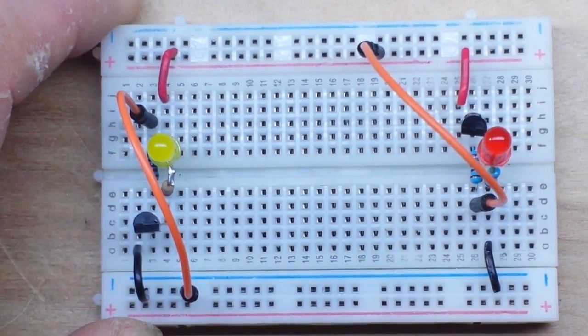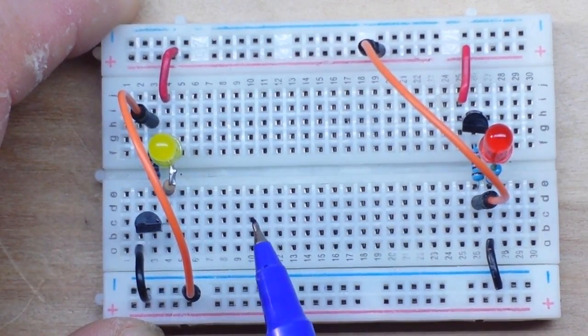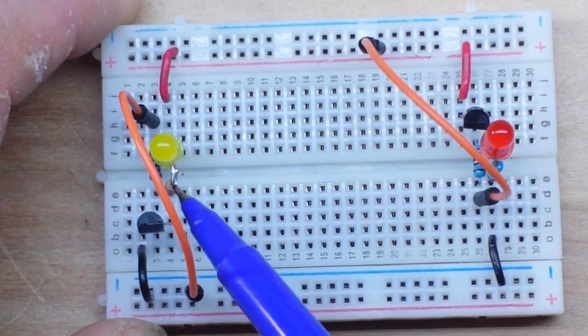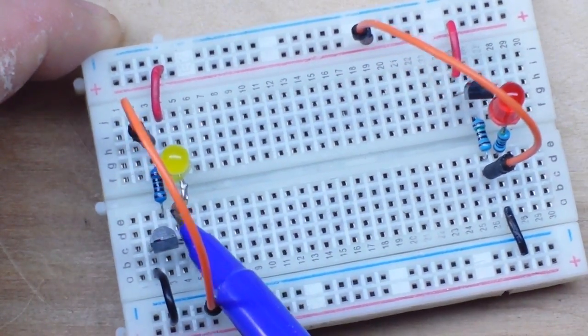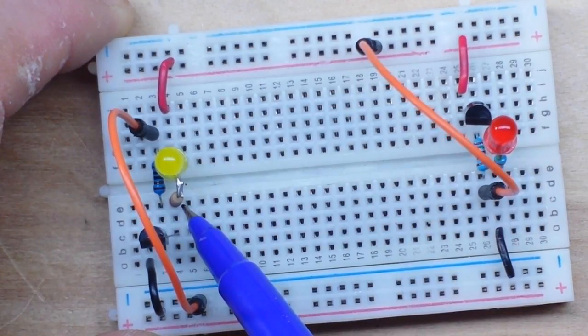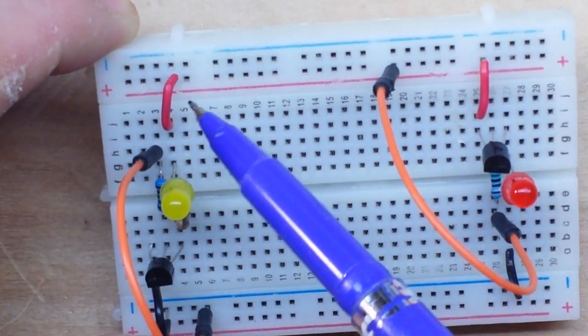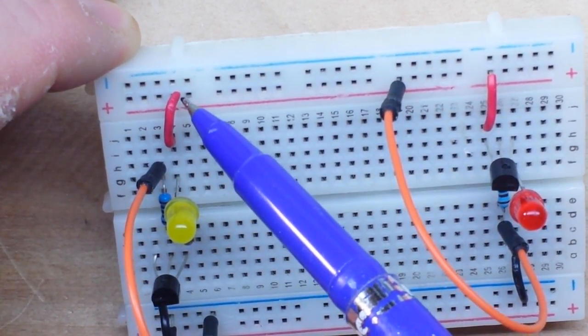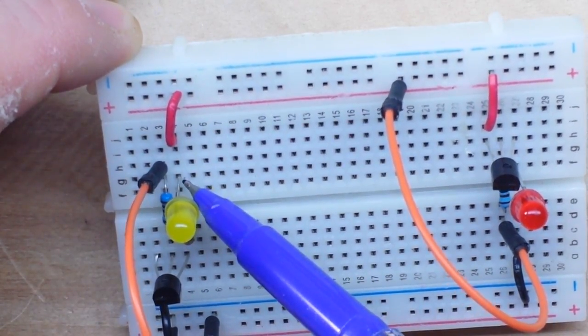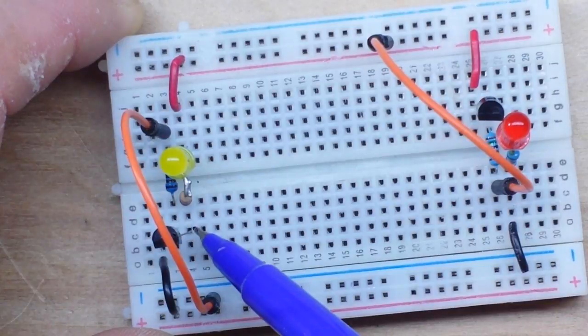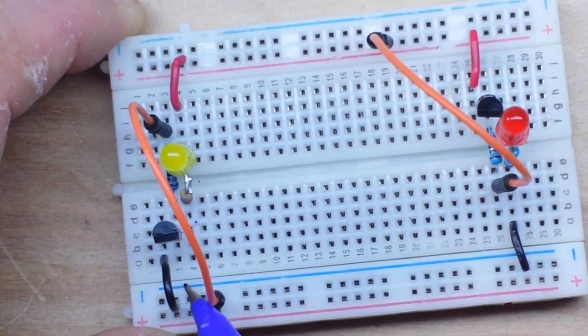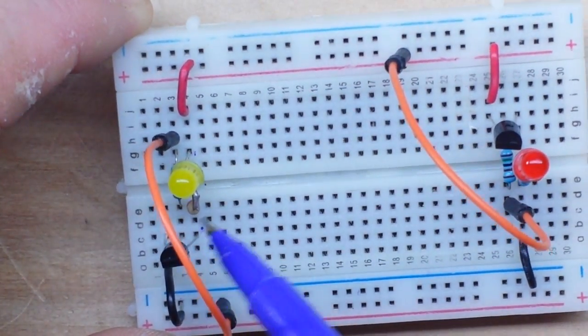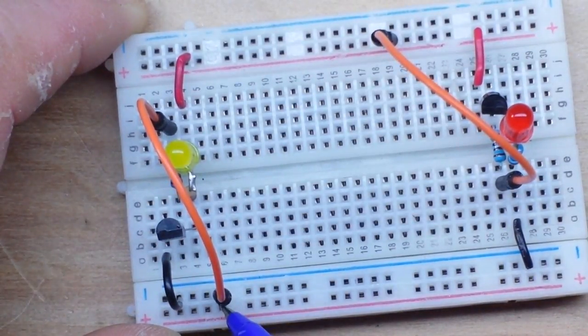Alright so I've rigged up two simple transistor switch circuits. Over here on the left side we have our NPN transistor, an LED, a base resistor, and a current limiting resistor on the LED. So our VCC flows through the LED into the collector, and our emitter goes to ground, and then we have our base. Right now the base is tied to ground.